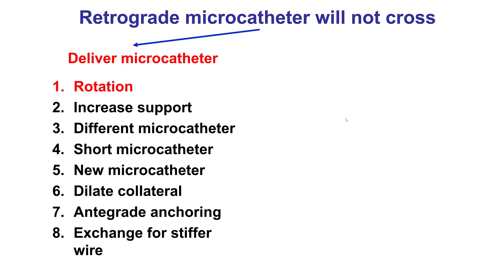The first thing one can do is to rotate the microcatheter, assuming this is one of the rotatable microcatheters such as the Corsair, the Turnpike, the Mamba, or the Teleport. Rotating the microcatheter can decrease friction and allow advancement through the collateral. Sometimes it may take several minutes, so this approach should be done consistently, but one should avoid over-rotating — no more than 10 turns in any direction before allowing the microcatheter to unwind.